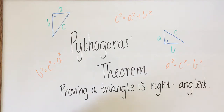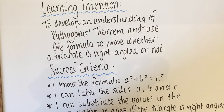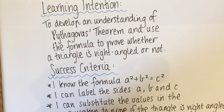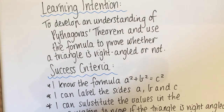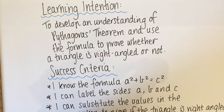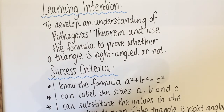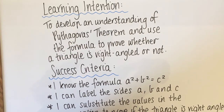We're going to be learning how to prove that a triangle is right-angled, or perhaps that it isn't right-angled. The learning intention for today's lesson is to develop an understanding of Pythagoras' theorem and use the formula to prove whether a triangle is right-angled or not.